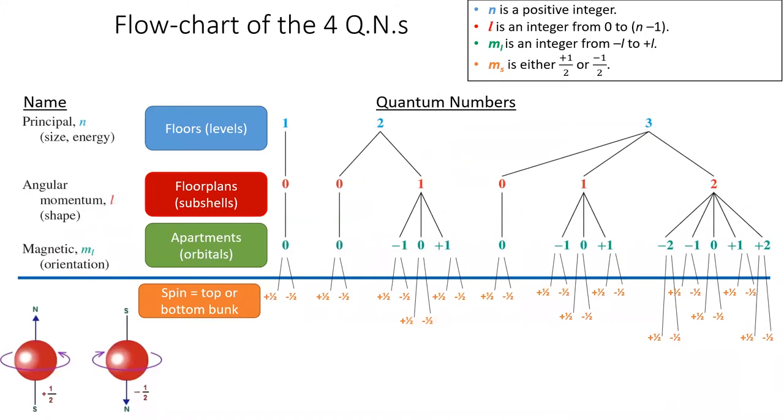This slide shows a flow chart of the four quantum numbers. Notice that as we increase the principal quantum number n on the top, we increase the total number of floor plans or apartment shapes represented by quantum number l, angular momentum, in red.